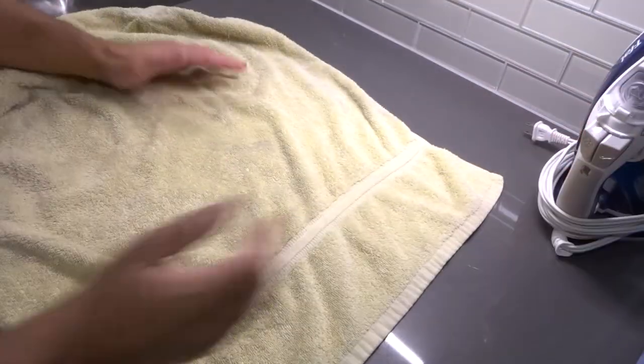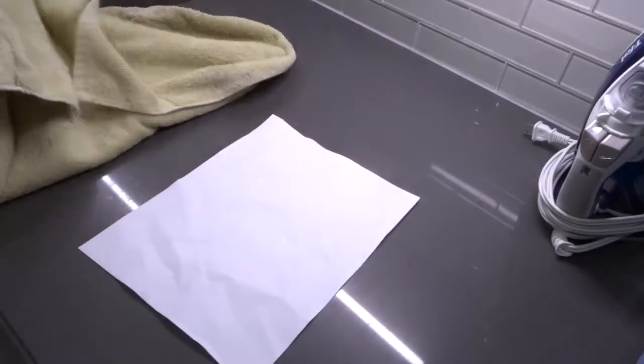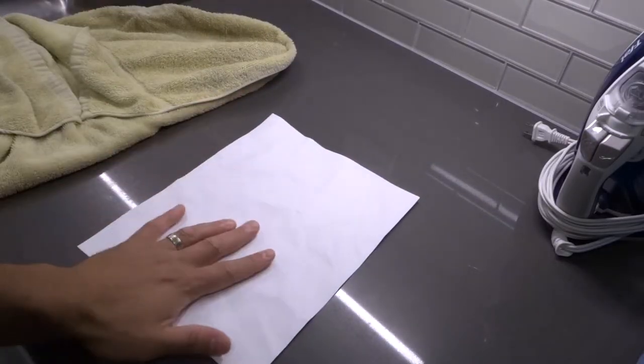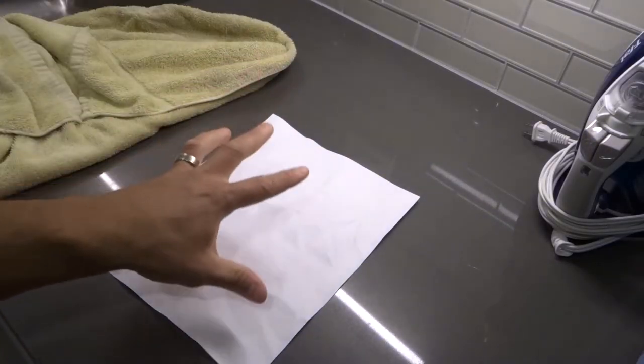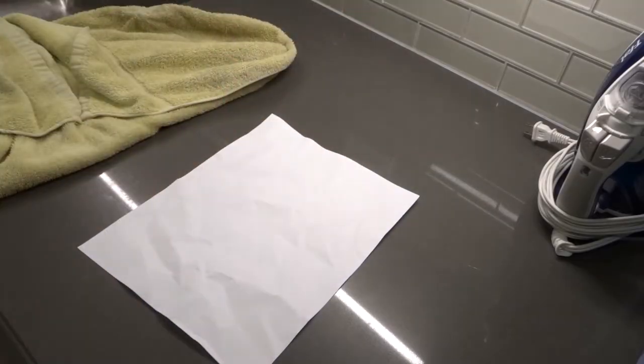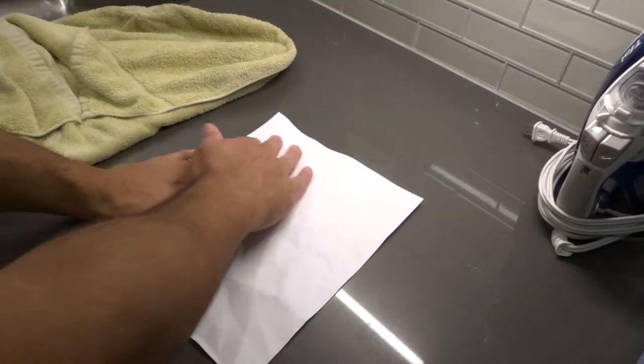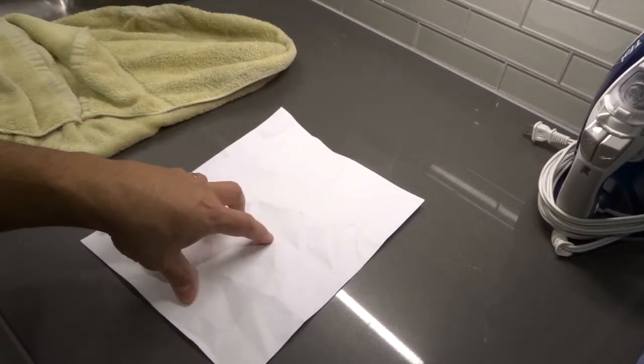Once you've done that for about 30 seconds or so, you want to remove the towel. At this point your paper shouldn't really feel wet, it should just feel steamed if that makes sense. It shouldn't be wet to the point where it's affecting anything on the page, it should just feel steamed.